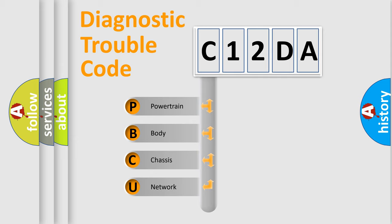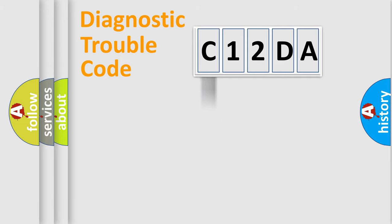We divide the electric system of automobile into four basic units: Powertrain, body, chassis, and network.